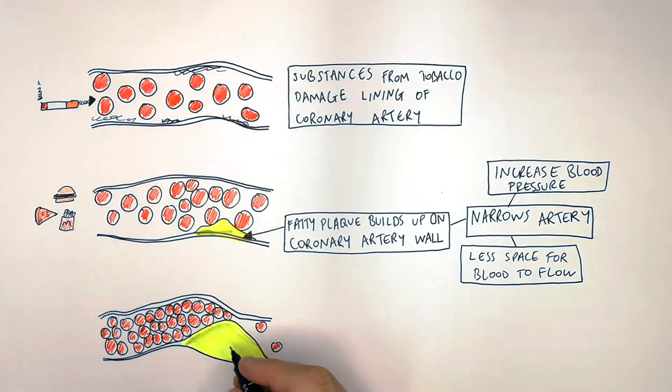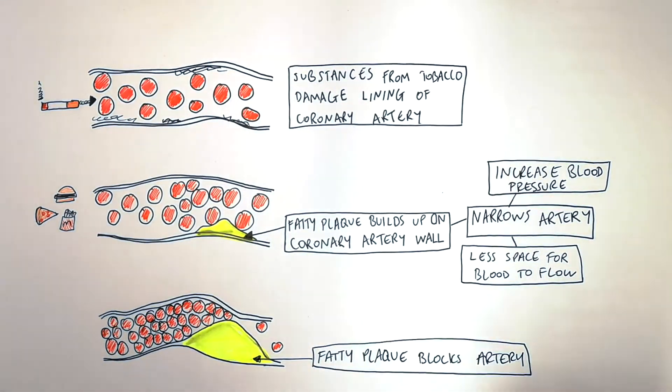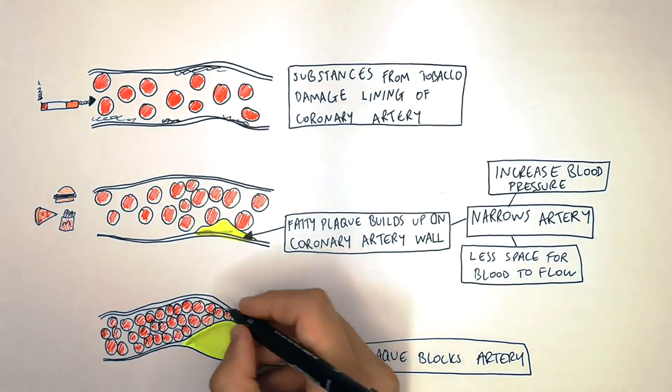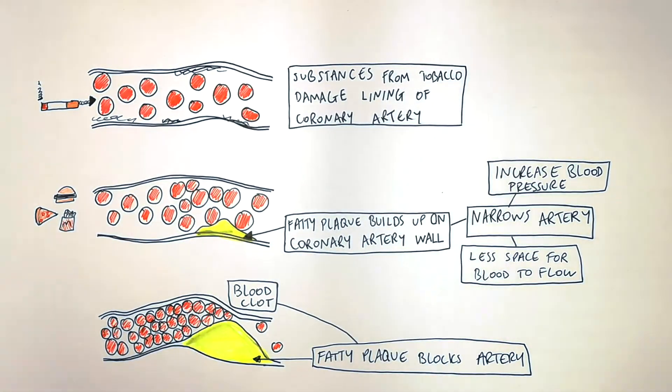The fatty plaque narrows the space of the lumen of the coronary artery so much that it blocks the artery, which can cause the blood to clot, reducing blood flow.